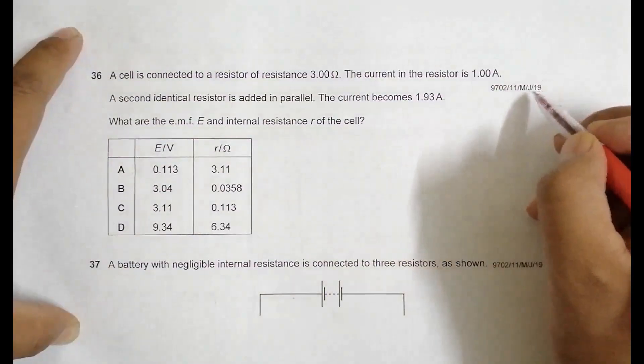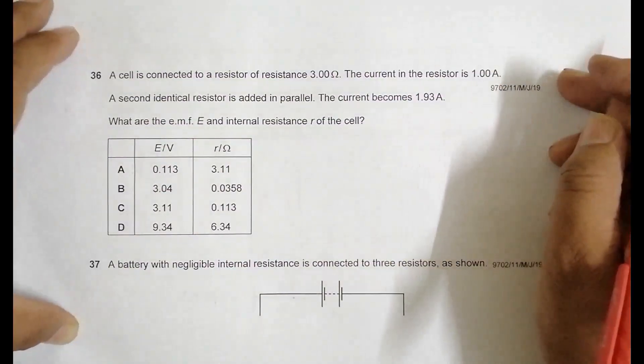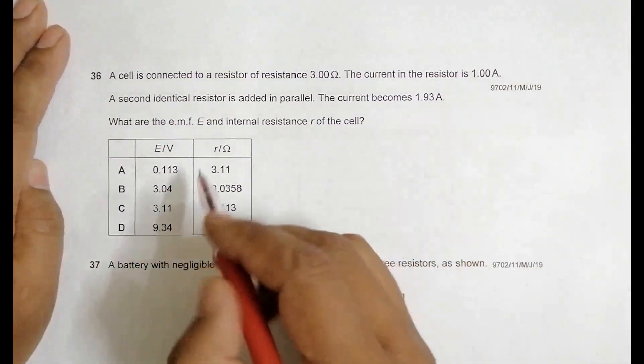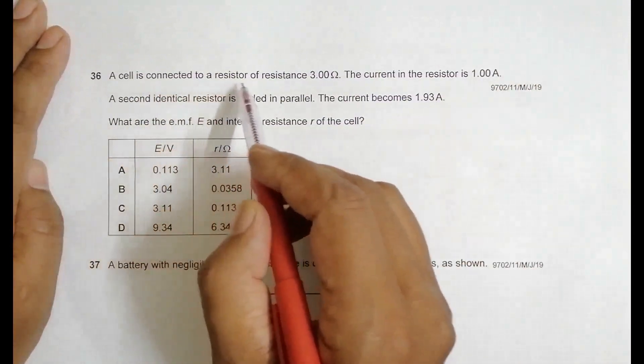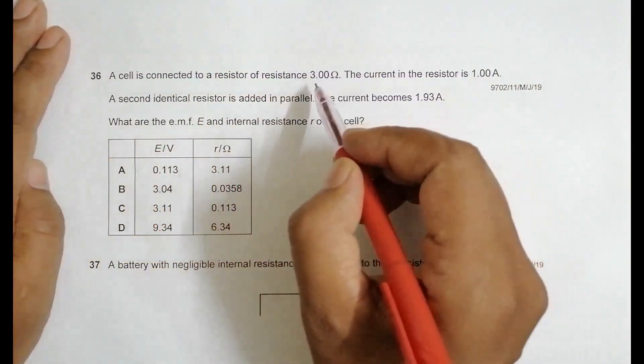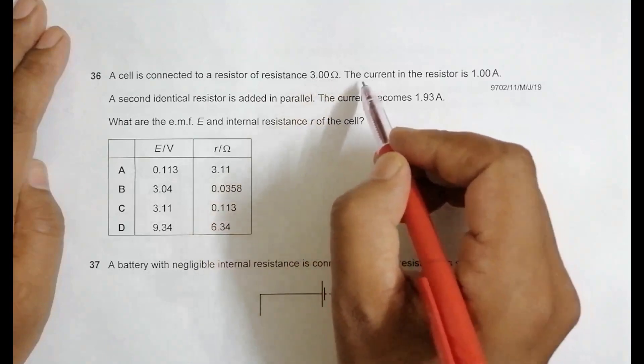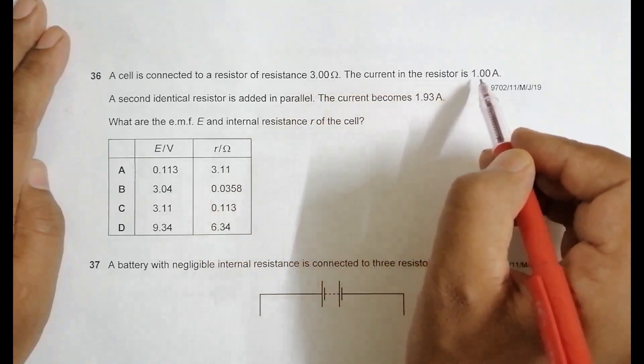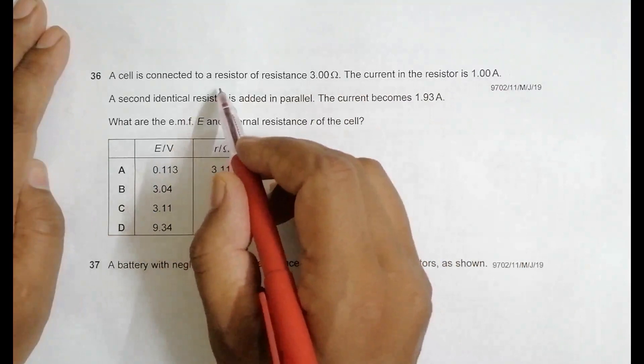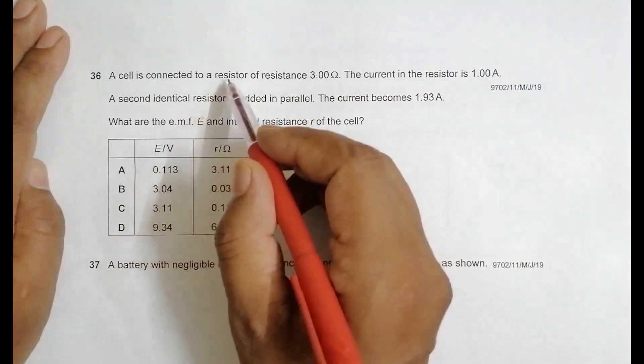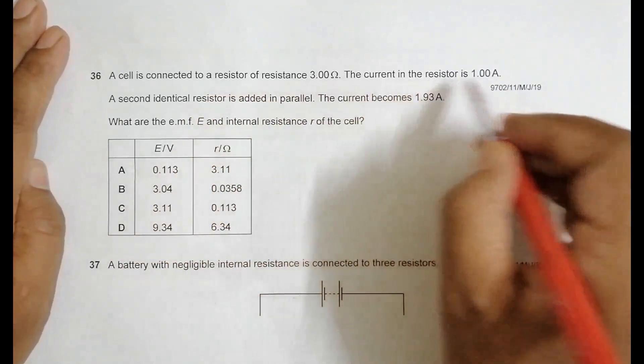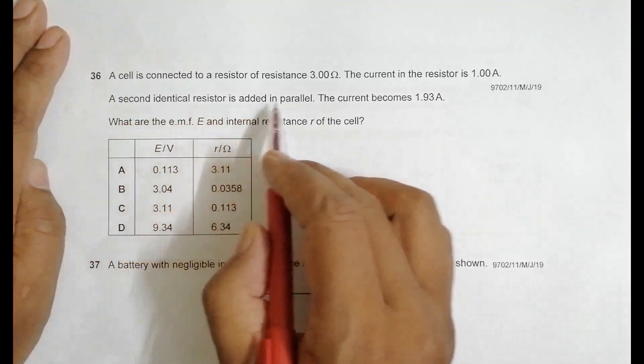Hello folks, this is 2019 major paper 1, question number 36. It says that a cell is connected to a resistor of resistance 3.00 ohm. The current in the resistor is 1.00 ampere. When the resistor, the outer resistor is this much, the current is this much. A second identical resistor is added in parallel.